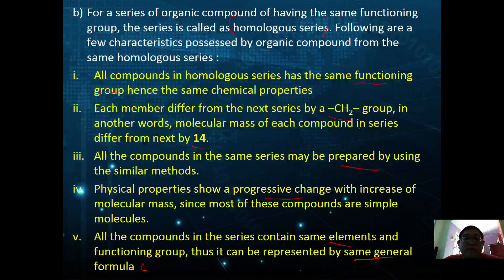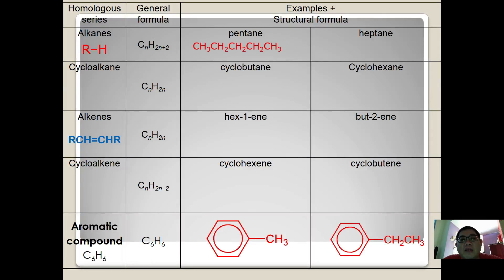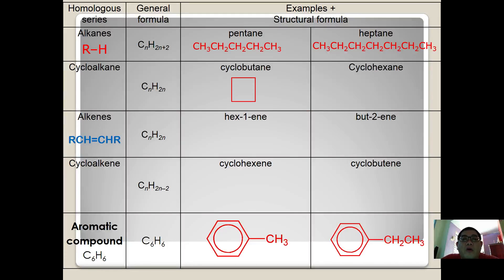Starting with alkane — alkane does not really have a functional group because it is a saturated carbon made of only C and H, so we denote it as an alkyl H. All alkanes have the general formula CₙH₂ₙ₊₂. For example, pentane and heptane. A derivation from alkane is cycloalkane, which has the general formula CₙH₂ₙ — a cyclic form of the organic compound. So butane becomes cyclobutane, and hexane becomes cyclohexane.